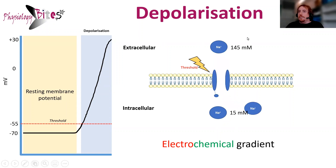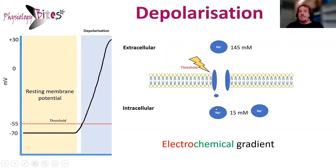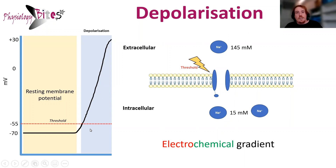These voltage-gated sodium channels, when they open, are quite wide and let a lot of sodium in rapidly. Remember, sodium is high in our extracellular space and low in our intracellular space. So there's a huge electrochemical gradient moving sodium from the outside of our cell to the inside. Because positive ions are now moving into the cell, the cell becomes more positively charged, which is what we see here.